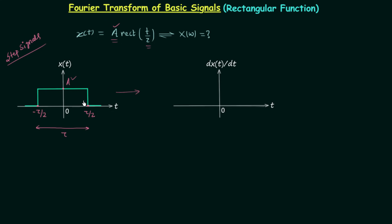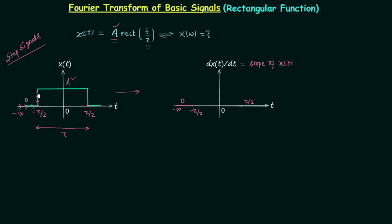Let's perform the differentiation of the given waveform. Starting from minus infinity, from minus infinity to minus tau by 2 the signal value is equal to 0 and is constant. So the waveform of dxt over dt will have the value equal to 0 from minus infinity to minus tau by 2, because the slope of x(t) in that region is equal to 0.